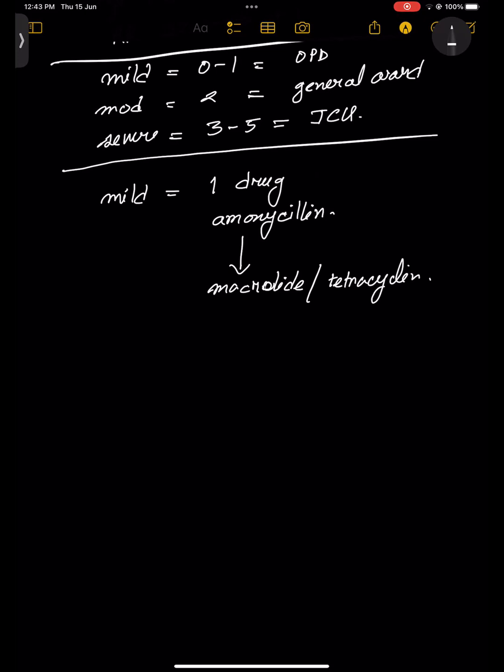For mild: one-drug regimen, give the prescription, send the patient home. One important update: previously it was a 7-day course, but NICE guidelines have now changed it to 5 days for mild. This is outdated in some textbooks, so please remember: mild is now a 5-day course.